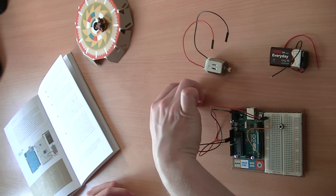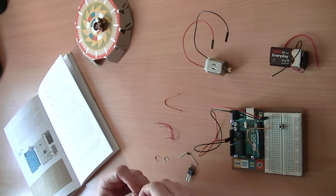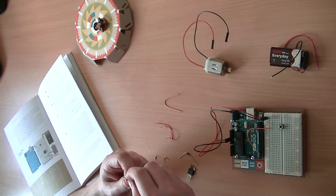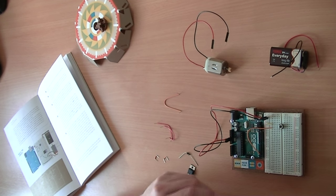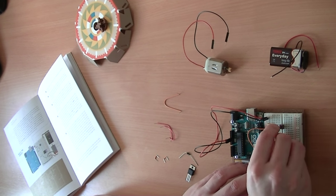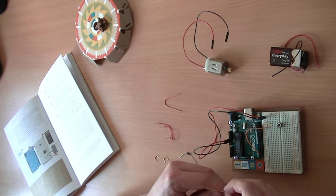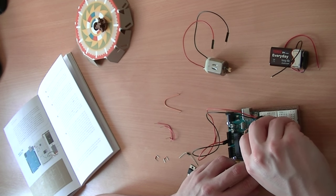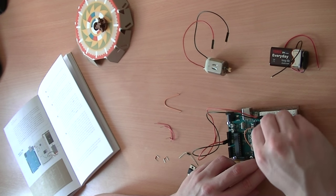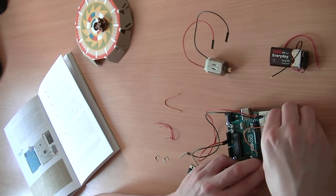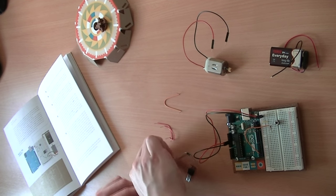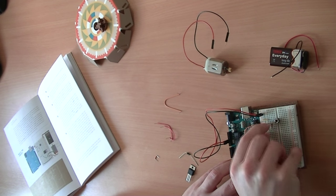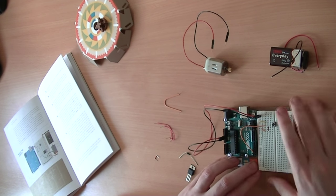Then we also want to connect a resistor, a 10k ohm resistor, to go from the button back to the ground as well. So we'll connect that between there and there, slot 10, row 10, and then we'll connect row 10 back to the ground, like so. So that's our button all sorted.